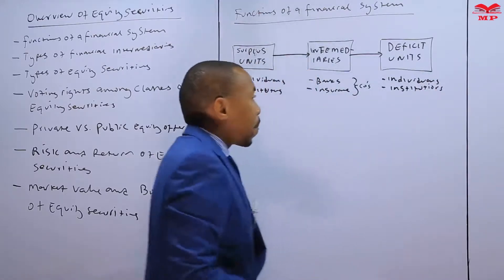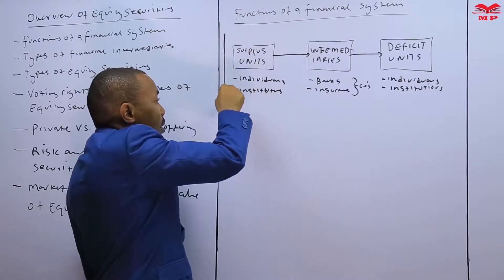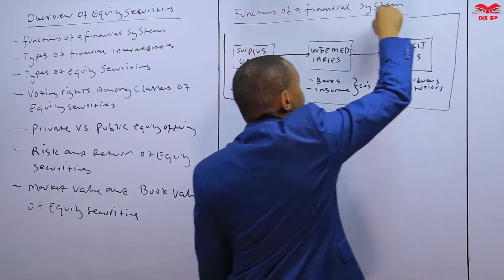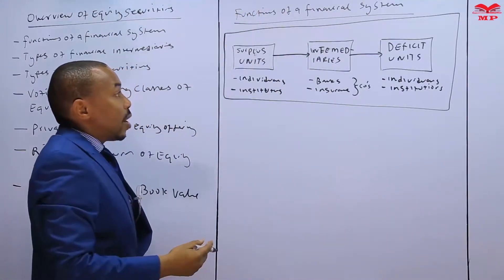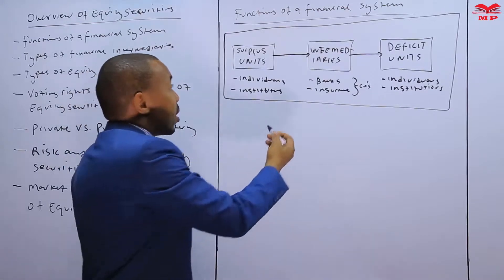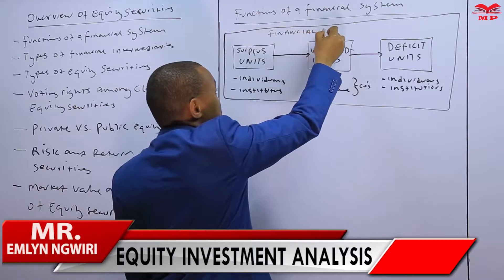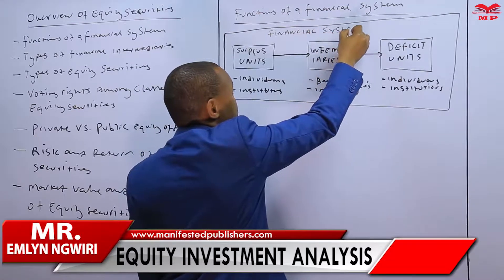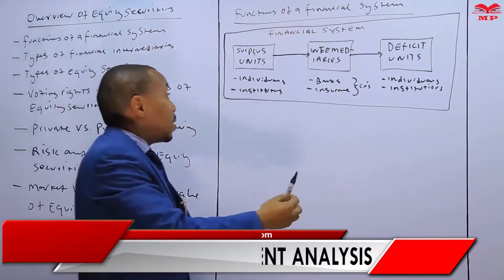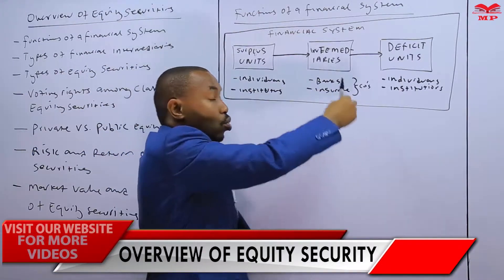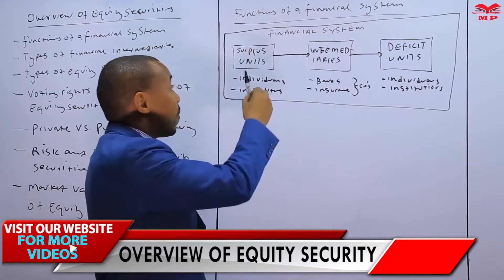The financial system exists — these institutions operate within a market economy. A financial system is a system that tries to allocate funds from the surplus units to the deficit units. That is the definition of a financial system.